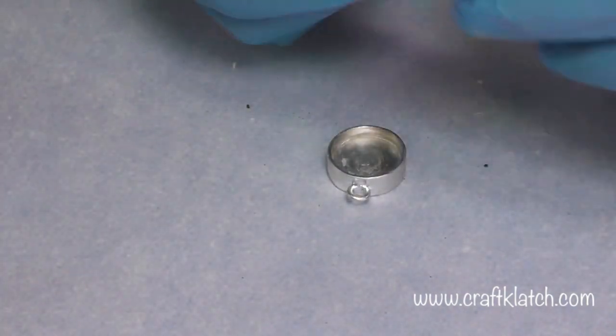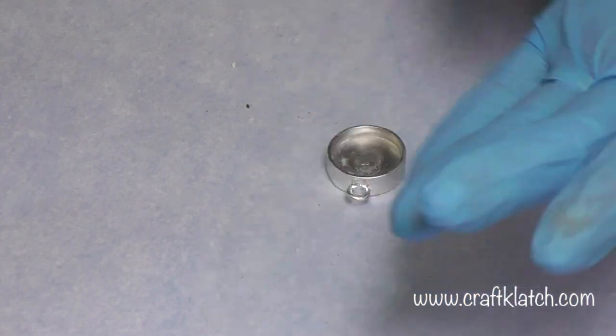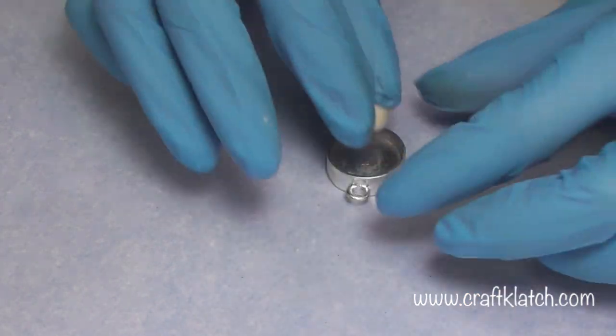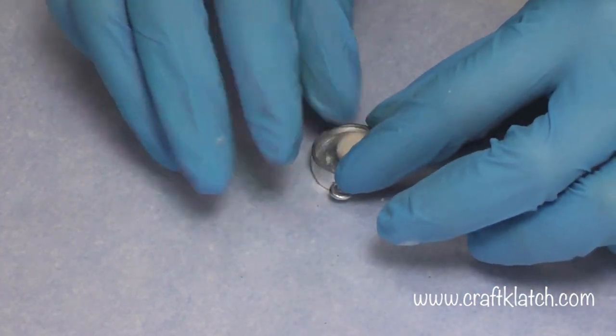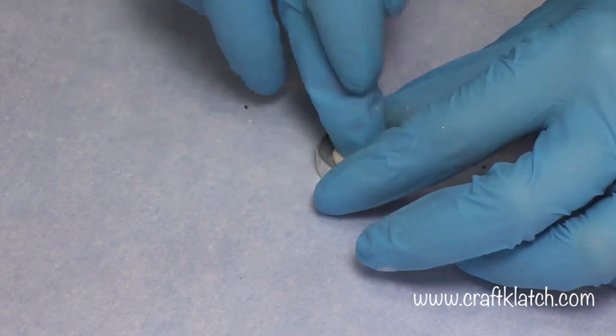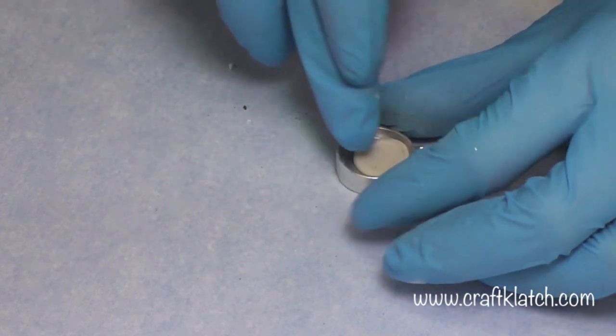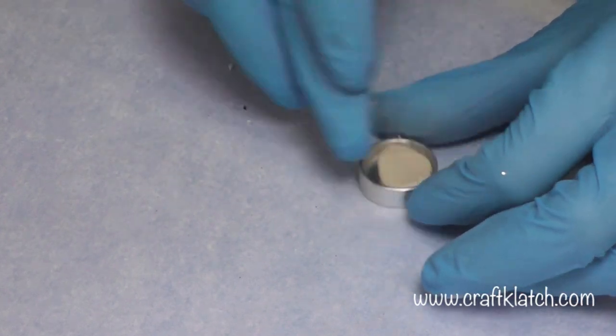Once you have the clay all mixed, you can put it in your bezel. And you don't want to fill the bezel completely, because the glass that we're going to be putting in there is going to displace some of it. All we're needing to do is have this kind of act as a sort of glue.